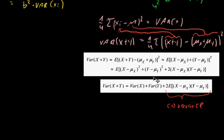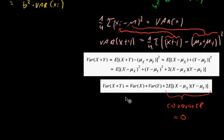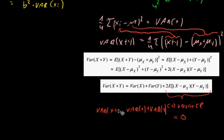What that is and what it means is for another video. The only hint is: if X and Y are independent — or not correlated — then this covariance term is zero.